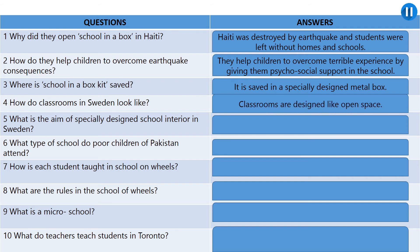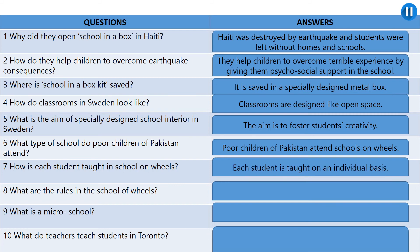Number five: what is the aim of the specially designed school interior in Sweden? The aim is to foster students' creativity. Number six: what type of school do poor children of Pakistan attend? Poor children of Pakistan attend schools on wheels. Question number seven: how is each student taught in school on wheels? Each student is taught on an individual basis. Question number eight: what are the rules in the school on wheels? The students are not allowed to be loud or to stand up, sing or make faces.